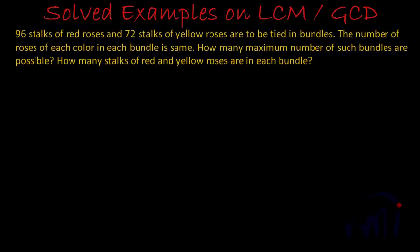Problem statement says: 96 stalks of red roses and 72 stalks of yellow roses are to be tied in bundles. The number of roses of each color in each bundle is same. How many maximum number of such bundles are possible?